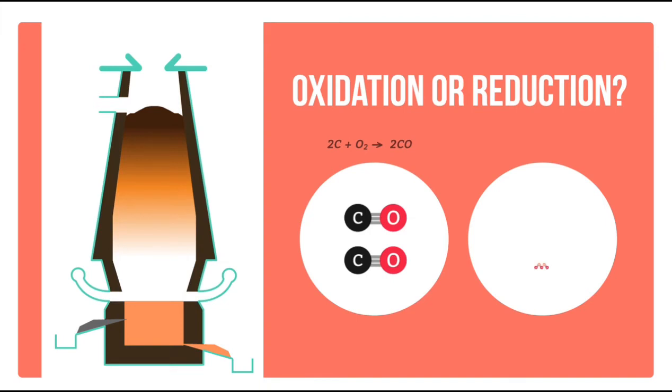So what happens to the carbon monoxide next? It reacts with the iron to release pure iron metal. Simultaneous oxidation and reduction takes place. Iron loses oxygen, it is reduced, but carbon monoxide gains oxygen and forms CO2. It is oxidized.